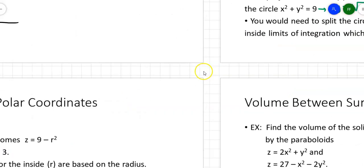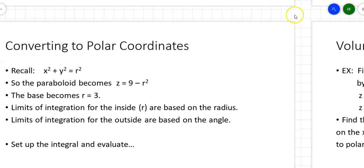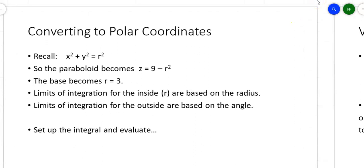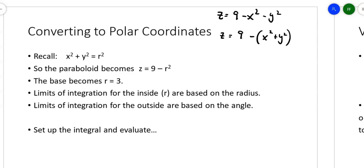Let's see how that works. Recall that x² + y² = r². So if z = 9 − x² − y², I can factor out the negative and recognize that x² + y² is r². The paraboloid simply becomes z = 9 − r². So the inside limits of integration are based on the radius and the outside are based on the angle.